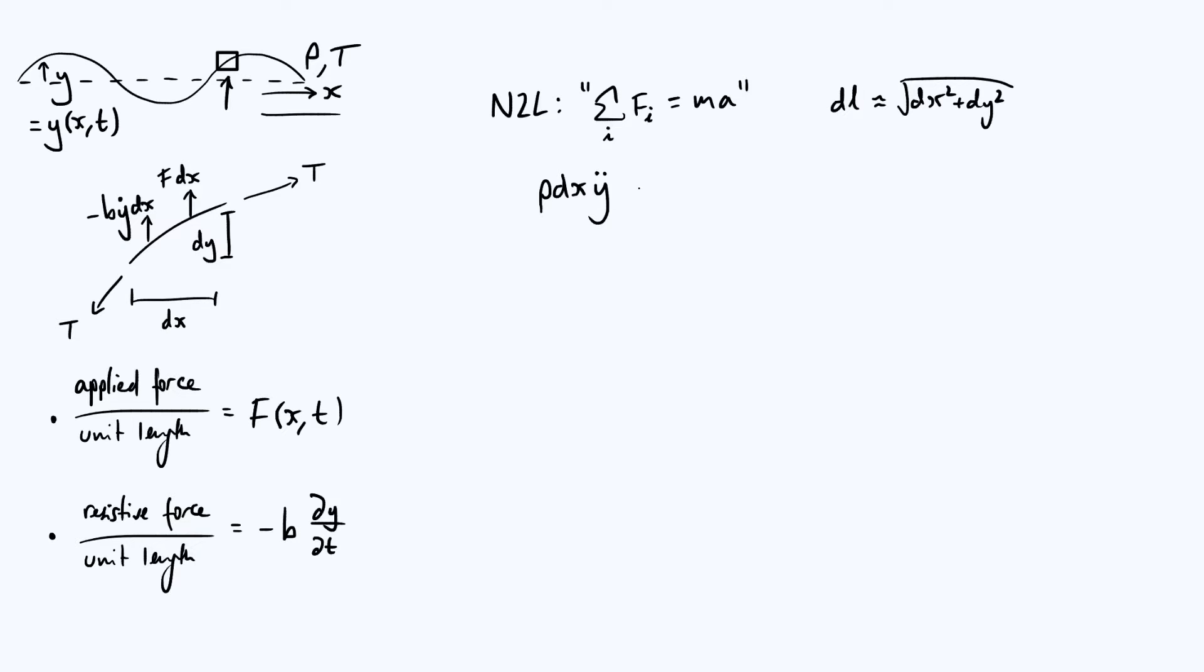Then we've got to add together all of the forces acting on this element. The easy ones to deal with are f dx and minus by dot dx from our diagram. Those are easy because they're just acting in the vertical direction. The tensions we've got to be a little bit more careful with, because they're not acting vertically, so we have to resolve them into components.